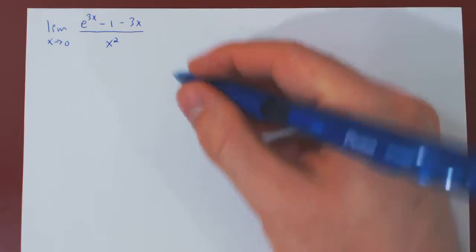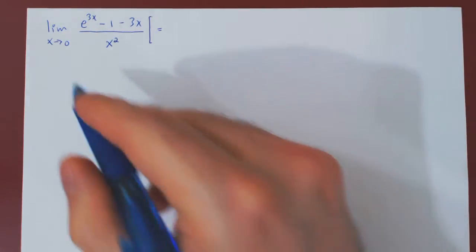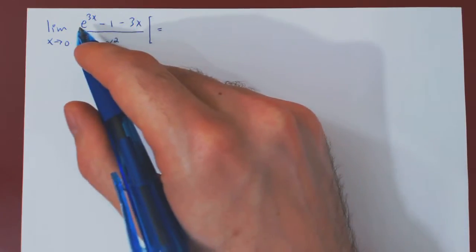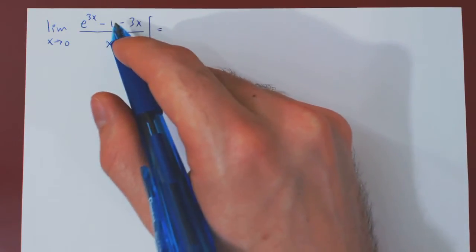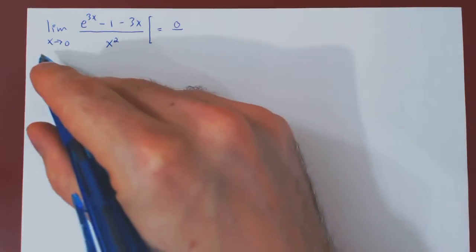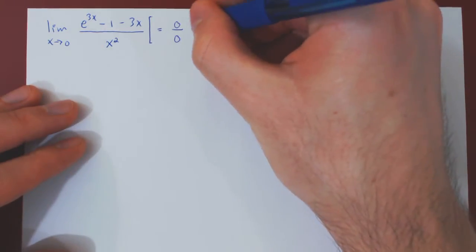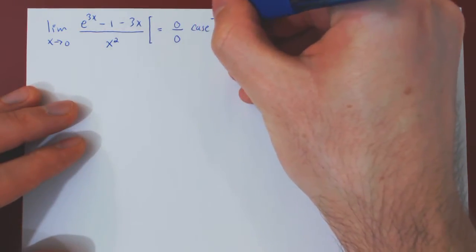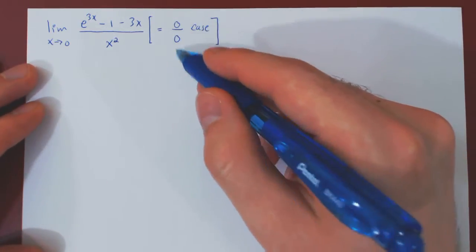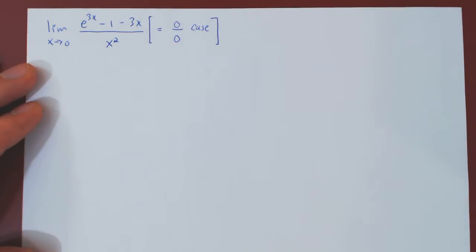As always when we consider a limit, we look at the case we're dealing with. As x goes to 0, 3x goes to 0, but e to the 0 is 1, so we have 1 minus 1, therefore 0, over x squared which also shrinks to 0. So we have a 0 over 0 case — a non-trivial indeterminate form — but we can attack it using L'Hôpital's rule.